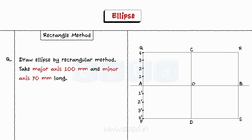Step 4. Divide AO into 4 equal parts and name the points as 1, 2, 3 and 4.